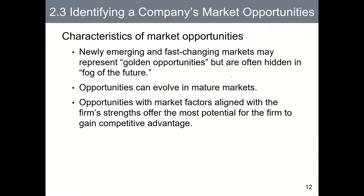Market opportunities can be plentiful or scarce depending on the industry. For technology, energy, or health industries there will be more opportunities, whereas for sunset industries such as CD or VCR, opportunities will be limited. Very often opportunities are hidden — it is up to firms to identify or create them. Opportunities can also evolve in mature markets; for example, the bubble tea industry introduced new products such as brown sugar milk, yogurt drink, and fruit tea. Importantly, a firm should only pursue opportunities aligned with its strengths — its resources and capabilities.